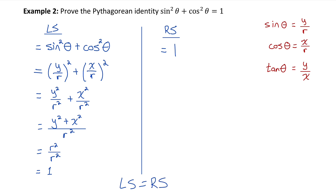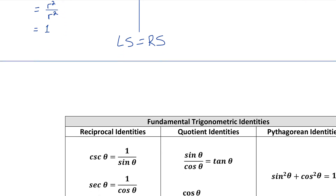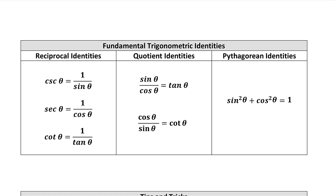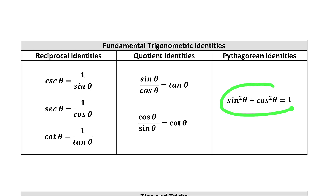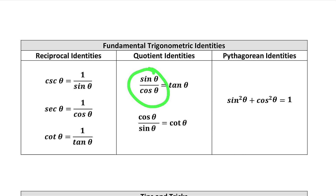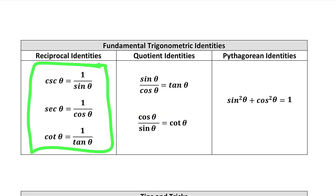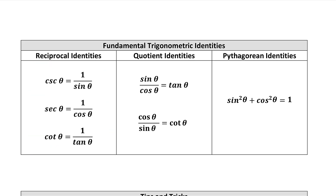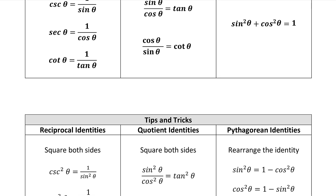Before moving on, let's summarize in a table what we know so far. The identity we just proved is called the Pythagorean identity, because we used the Pythagorean theorem to prove it. The other identity we proved is the quotient identity: tan of an angle equals sine over cos. And because cotangent is the reciprocal of tangent, cotangent equals cos over sine. You should also know your reciprocal identities, which we learned earlier in the unit. Now that we know these identities, we can use them to help prove other more complicated identities.